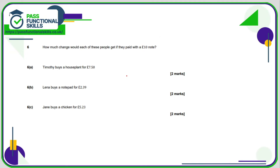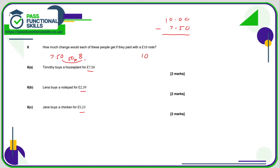Question six: how much change would each person get if they paid with a £10 note? We need to subtract from £10. Rather than column subtraction with all those zeros, I use a stepping-stones method — finding the difference between the amount and £10. For £7.50: from £7.50 to £8.00 is 50p, and from £8 to £10 is £2, so the overall difference is £2.50.